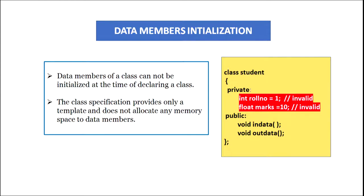For that reason there are special member functions declared inside the class that give initial values to the data members of the class. We can see in this example: if we assign the value 1 to roll number and 10 to marks, this will give an error because at present no memory space has been allocated to these data members. So this is wrong and should be avoided.